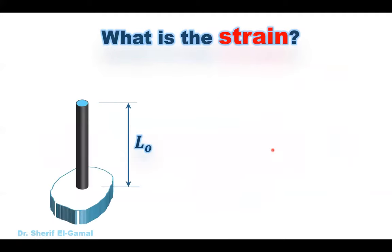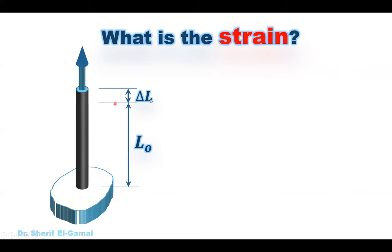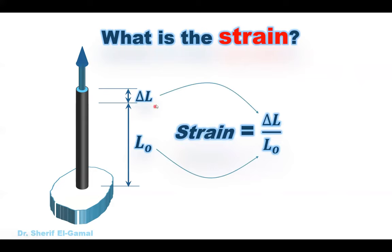The second part is the strain. If we have a steel reinforcing bar fixed from one side with an initial length L₀, and we apply a tension force, the bar will elongate. The length increases by a distance delta L. The strain is the increase in length delta L divided by the original length L₀. Since both are lengths, the strain is unitless — no units.